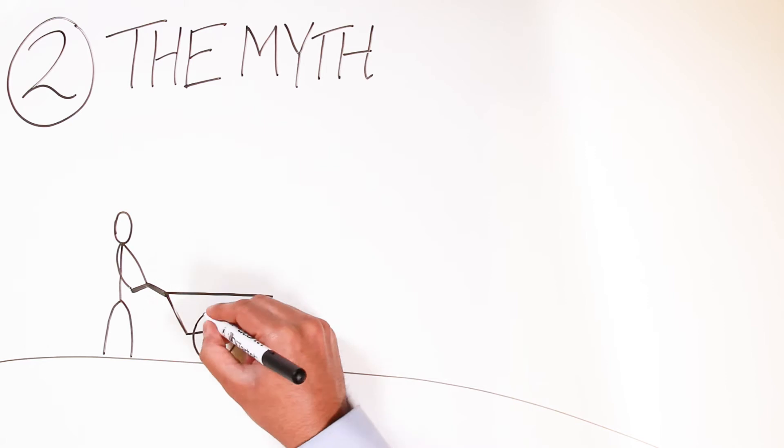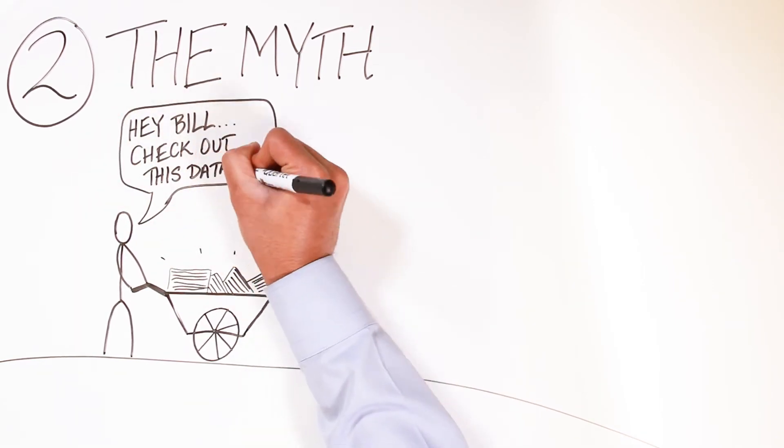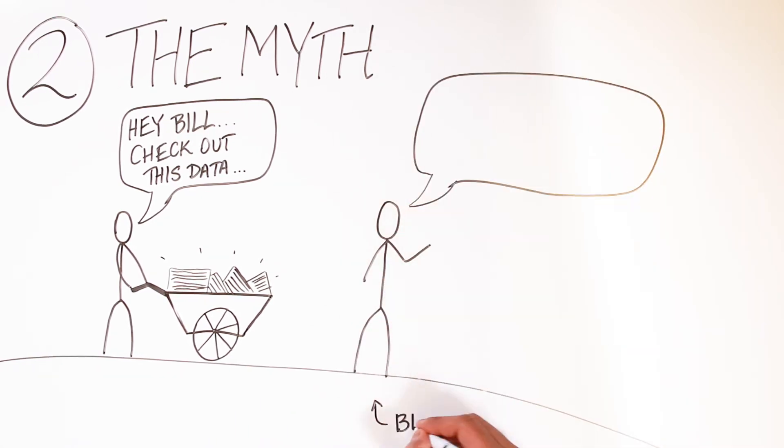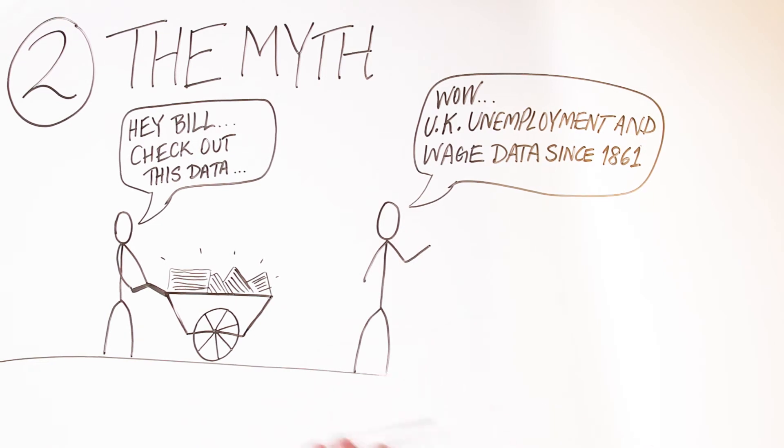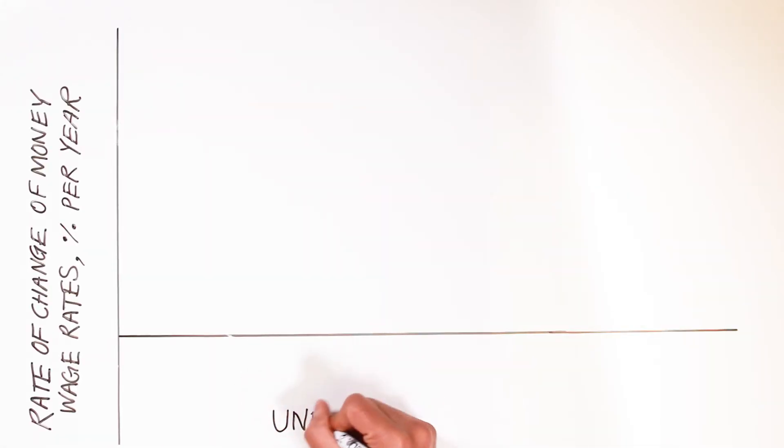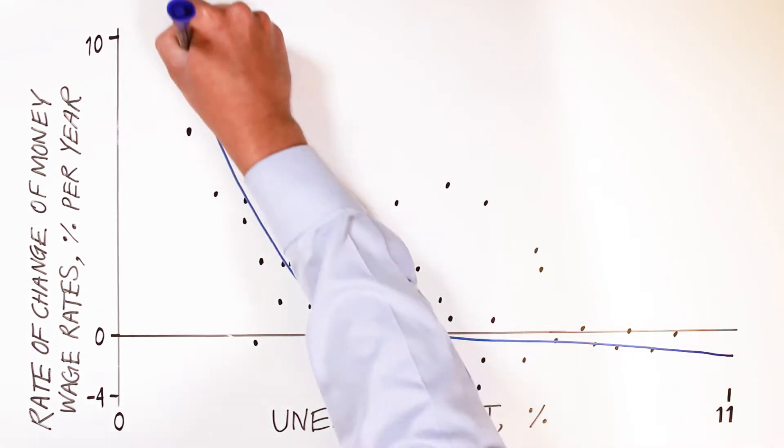And that's where the myth begins. You see, a friend gave Bill Phillips about 100 years of economic data. Specifically, nominal wage rates and the unemployment rate in the United Kingdom. Bill plotted 1861 to 1913. And what did he see? An interesting down-sloping curve.